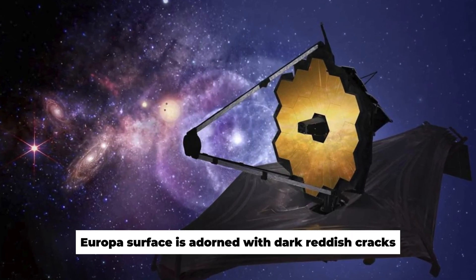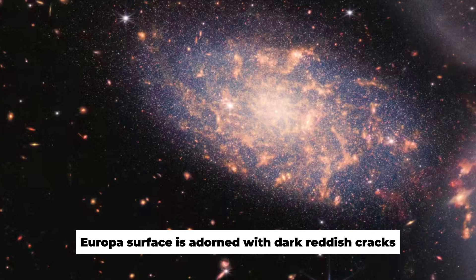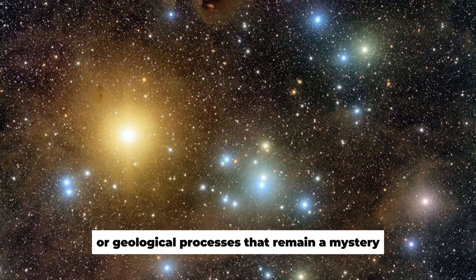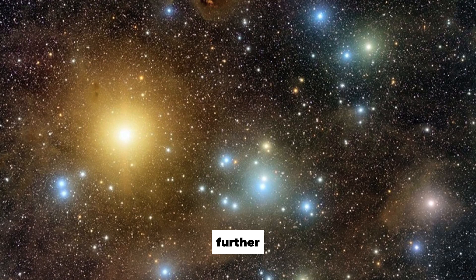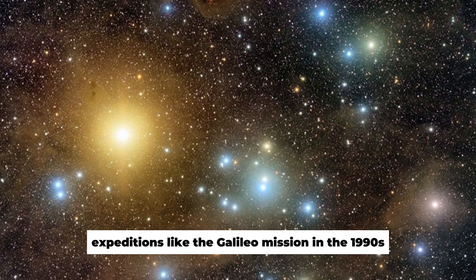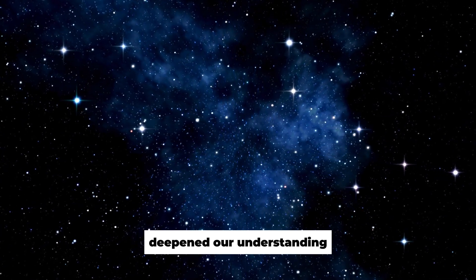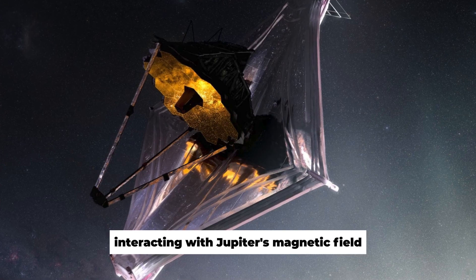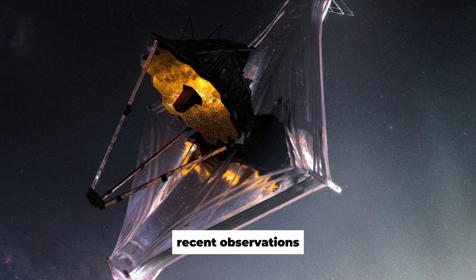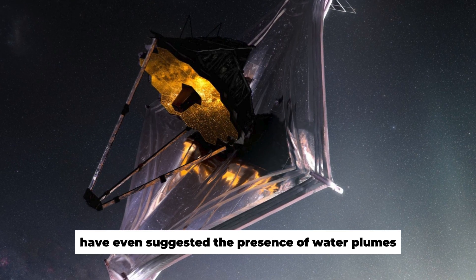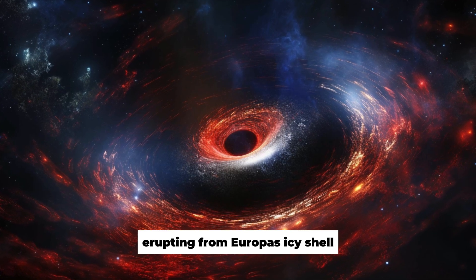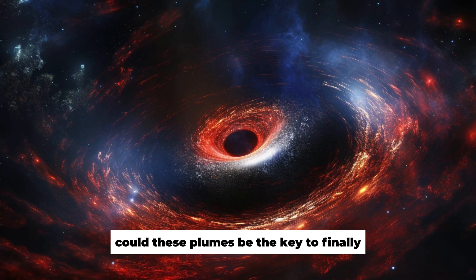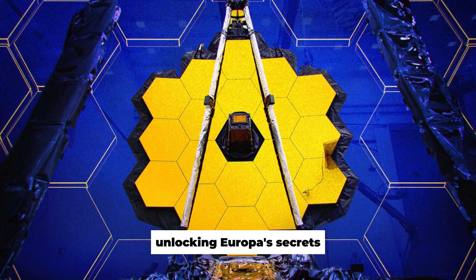Instead, Europa's surface is adorned with dark reddish cracks, possibly the result of icy volcanism or geological processes that remain a mystery. Further expeditions like the Galileo mission in the 1990s deepened our understanding, revealing magnetic anomalies that hinted at a subsurface ocean interacting with Jupiter's magnetic field. Recent observations have even suggested the presence of water plumes erupting from Europa's icy shell, reaching heights that defy the moon's diminutive size.